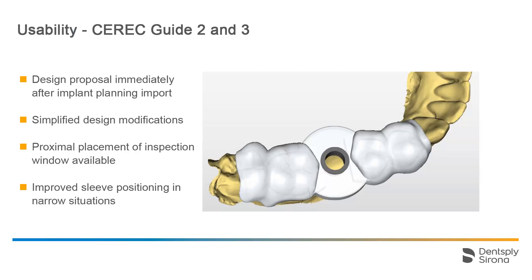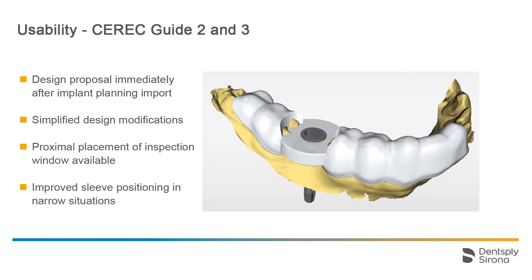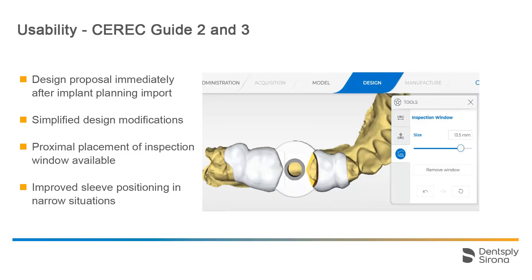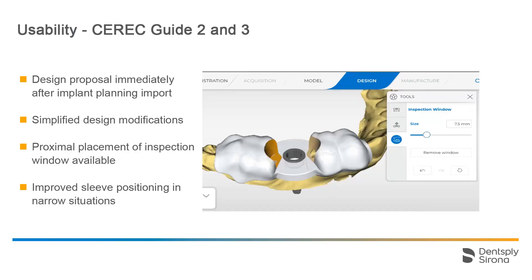The guide can further be modified with the new tools. It is also possible now to place the inspection window proximal to the sleeve or implant position. This offers the additional advantage of improved sleeve positioning in narrow situations. For detailed information regarding these functions, see our tutorial Design Workflow CEREC Guide 2 and 3.